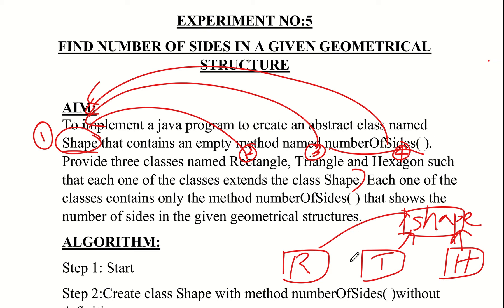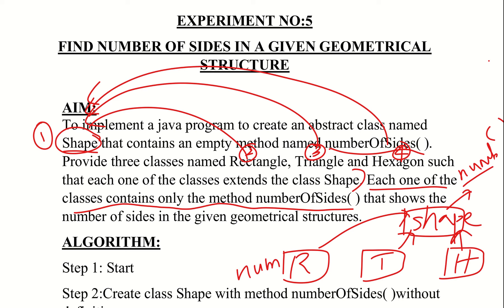Shape has an empty method — an empty method means it is an abstract method. The method is called number of sides. Each one of the classes contains the method number of sides, which shows the number of sides in the given geometrical structures. That is why we use Shape as an empty abstract method.